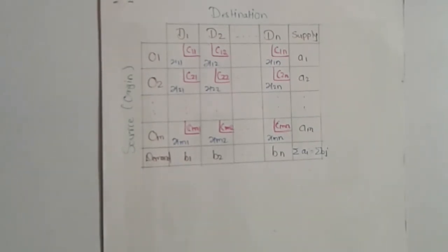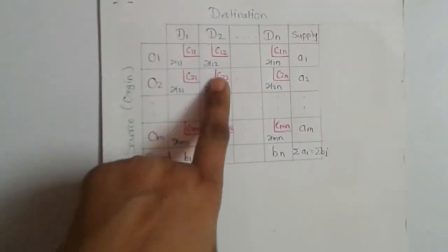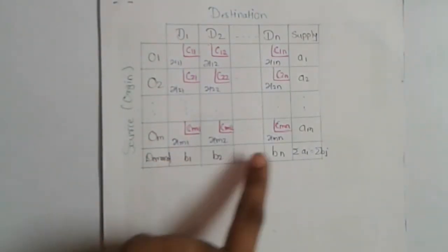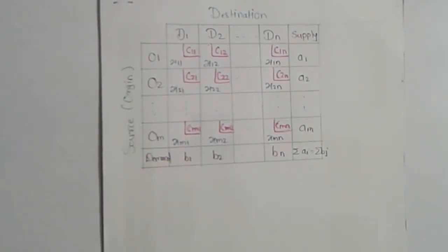In the transportation problem we have to determine the number of allocations i.e. the values of X11, X12 up to X1N, up to XMN, so that the total transportation cost is minimum.